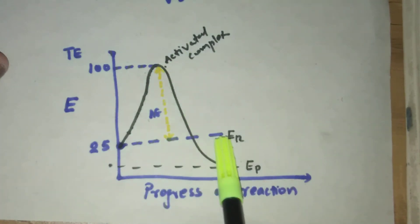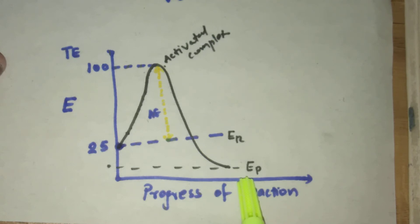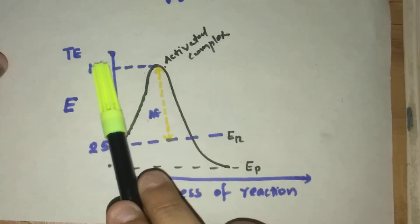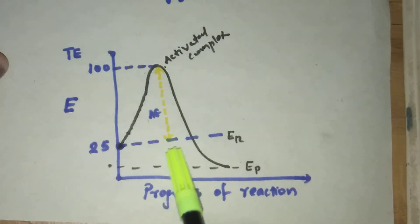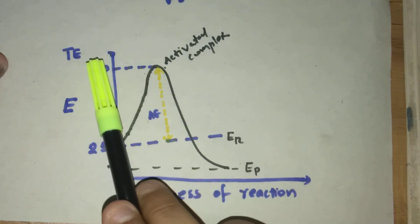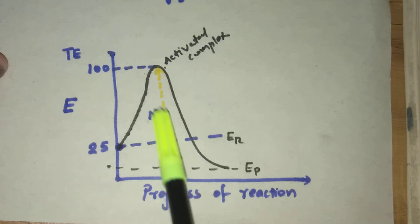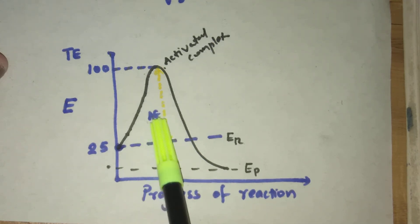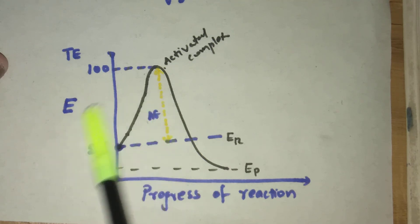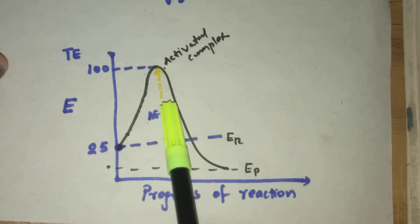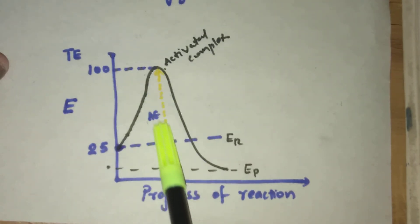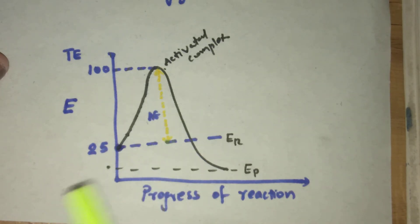After that, the activated complex loses energy to form products. The threshold energy is shown on the graph, and the difference between the threshold energy and the average kinetic energy of the reactant is the activation energy — 75 kilojoule per mole — shown here on the graph.